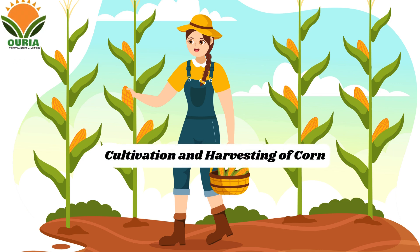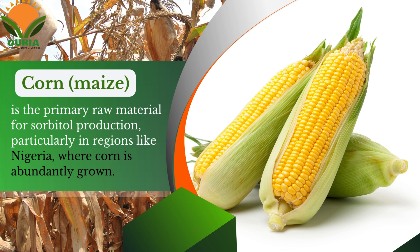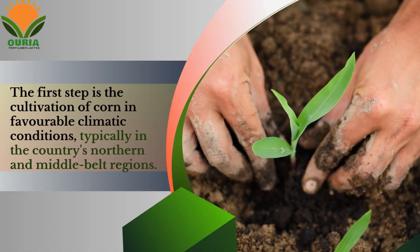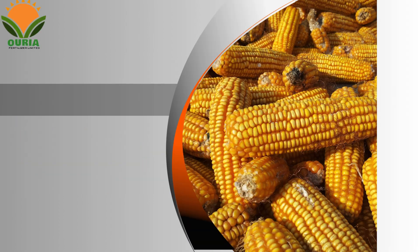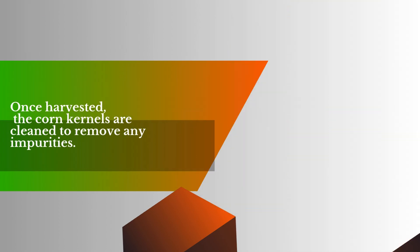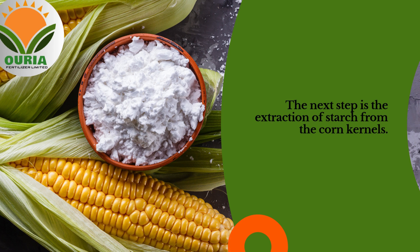Cultivation and harvesting of corn: Corn (maize) is the primary raw material for sorbitol production, particularly in regions like Nigeria where corn is abundantly grown. The first step is the cultivation of corn in favorable climatic conditions, typically in the country's northern and middle belt regions. Once harvested, the corn kernels are cleaned to remove any impurities.